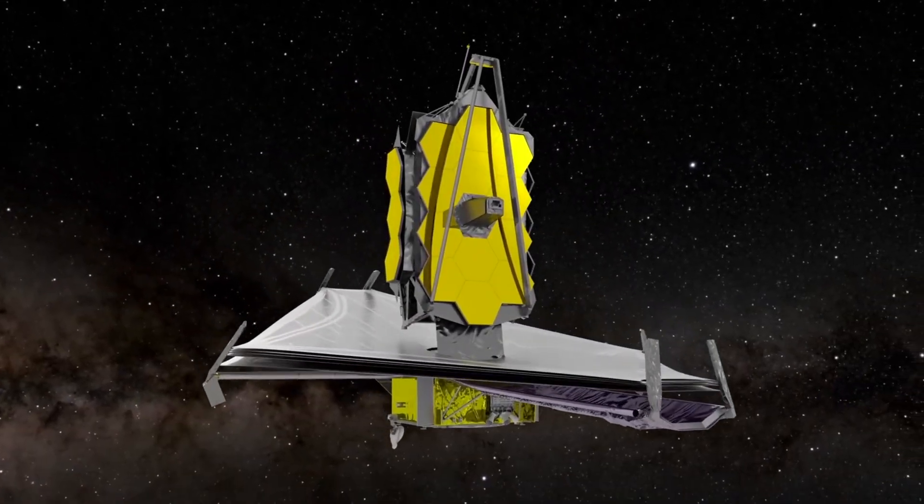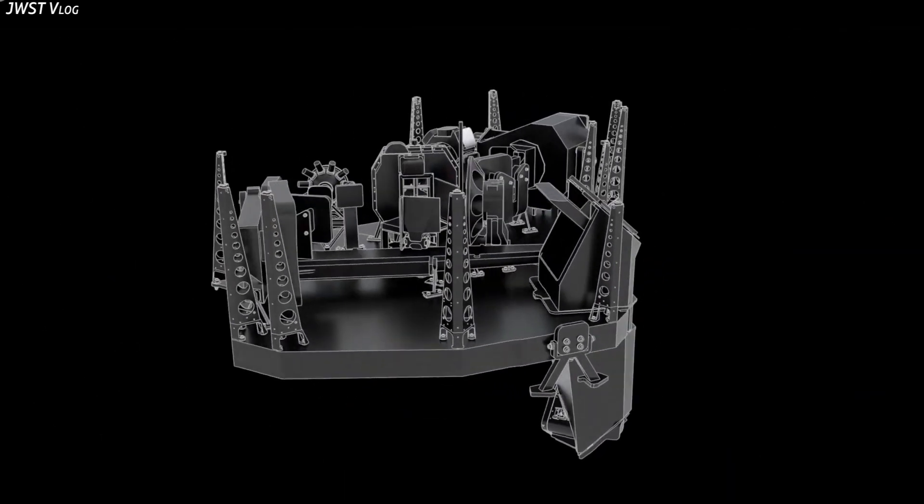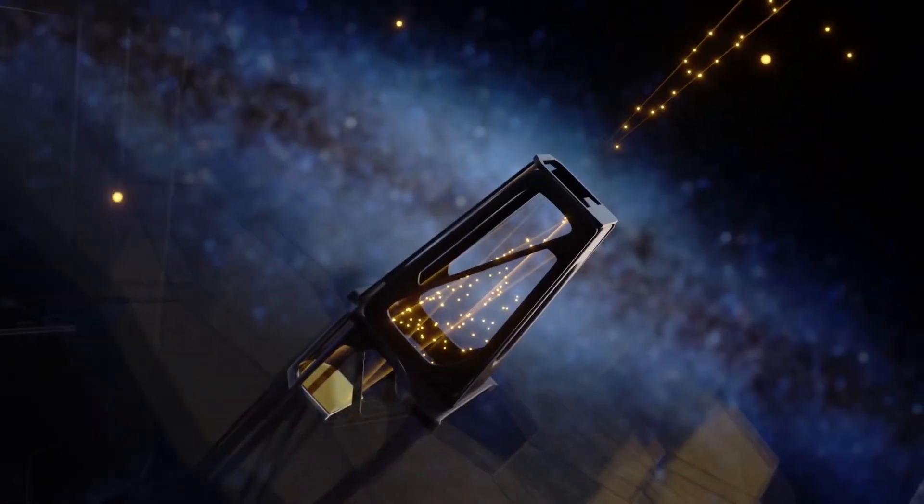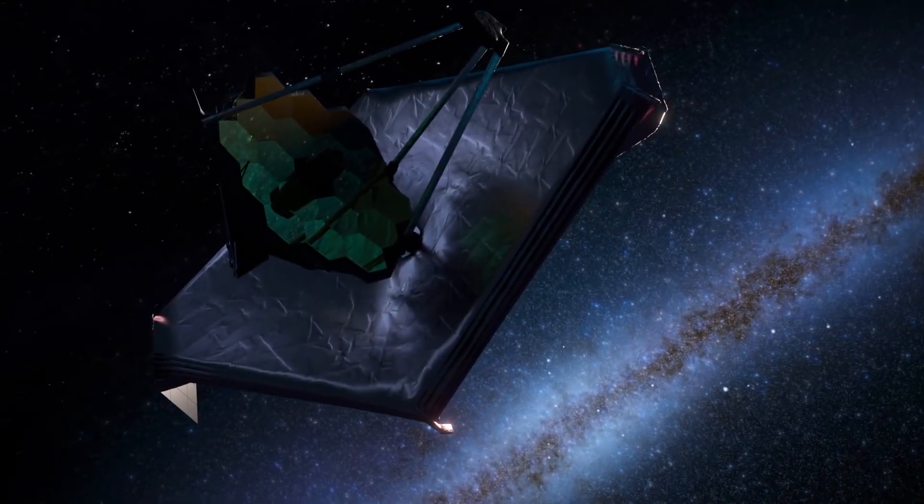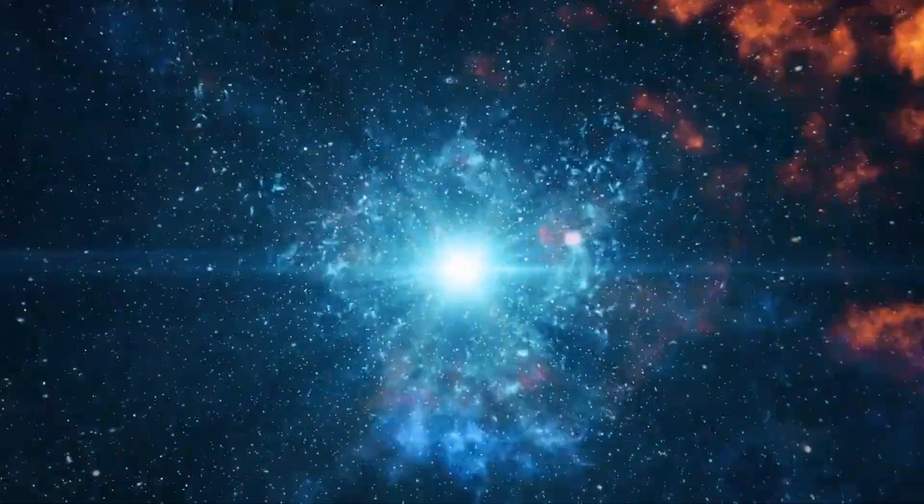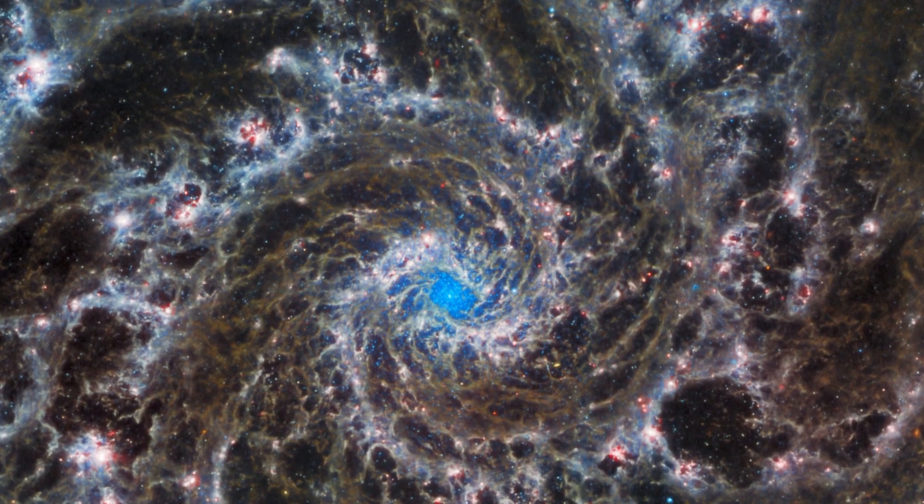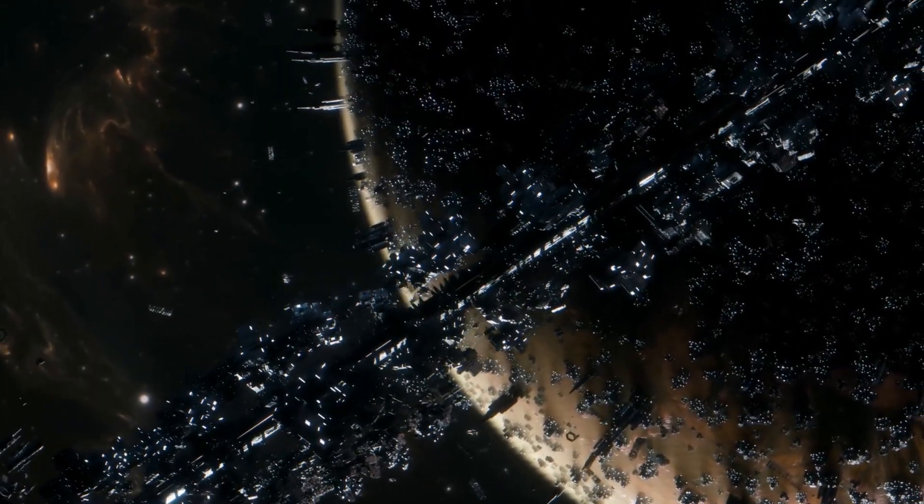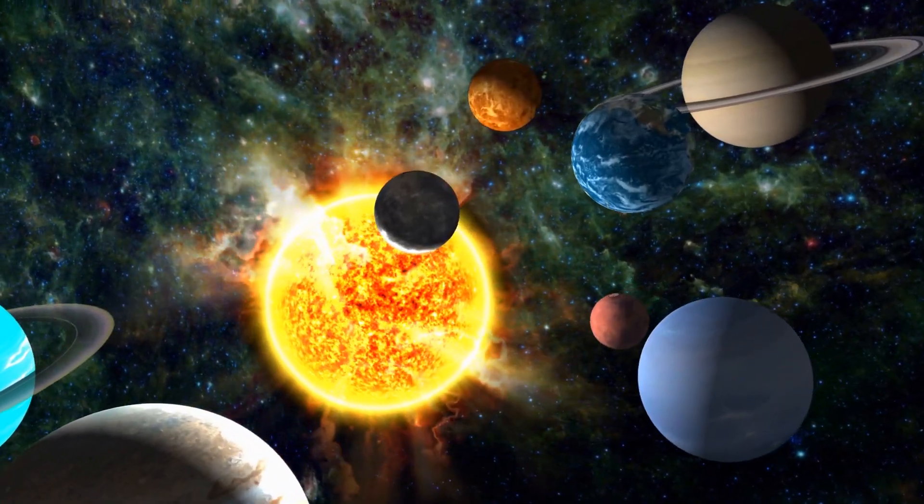This is where the James Webb Space Telescope, the mother of all telescopes, comes in. The infrared instrument on the JWST enables it to focus on brilliant objects such as very distant galaxies. The JWST's mission is to look for the first light in the universe and celestial objects that appeared right after the Big Bang. Examine the development and evolution of galaxies, investigate the atmospheres of distant exoplanets, photograph planets in our own solar system, and look for evidence of dark matter.